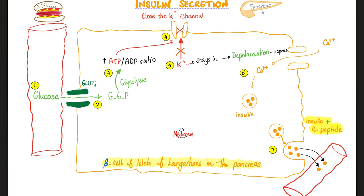Potassium will have to stay in — a positive charge inside the cell equals depolarization, activation — which opens the calcium channel. Calcium comes in; calcium is the hero of contraction. It's going to contract and burst this insulin vesicle, and then insulin is out. Insulin and C-peptide are now in the bloodstream. Insulin floats in the bloodstream until it reaches adipose tissue and skeletal muscle, telling them to open their door — GLUT4.